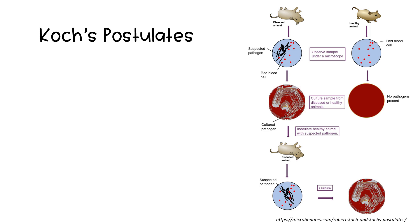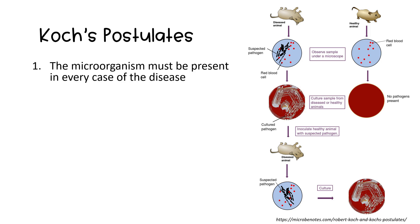Robert Koch developed a set of criteria that assisted him in finding the relationship between a specific microorganism and a particular disease. This is known as Koch's postulates and there are four criteria. The first: the microorganism must be present in every case of the disease. This means that the specific microorganism associated with a particular disease should be consistently found in individuals who have the disease and absent in those who do not.